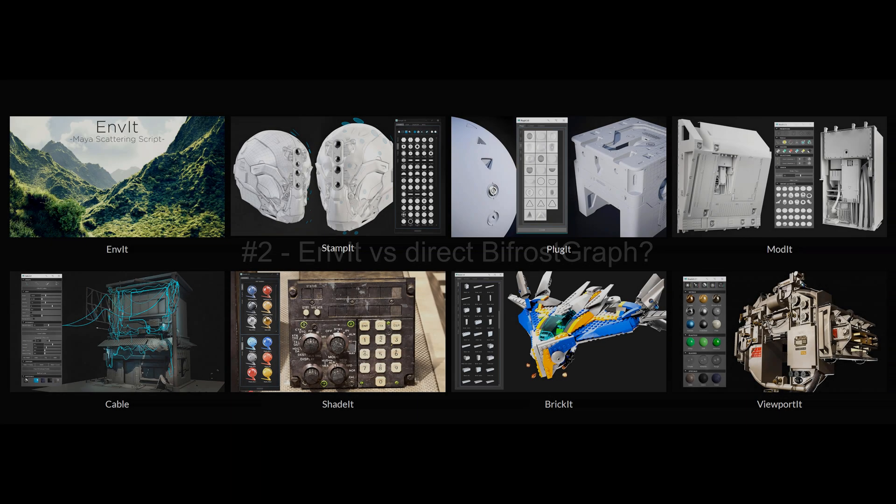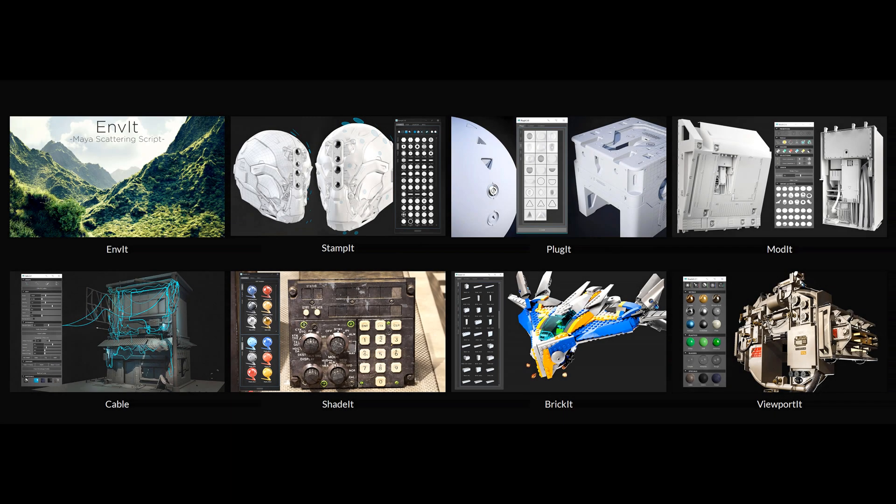Knowing that, some ask why use Anvit instead of building your own Bifrost graph. Of course, it's possible. But what is the main purpose of a script? It's to automate tasks for you using existing tools. Which means you can do everything scripts do, but that will take you months instead of some seconds. Scripts are nothing more than a gain of time and comfort to use. And that's the main idea of Anvit.